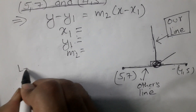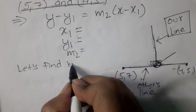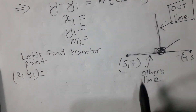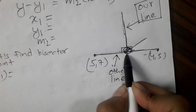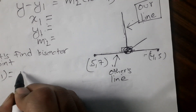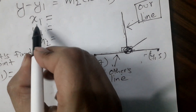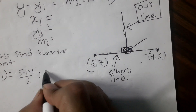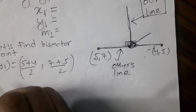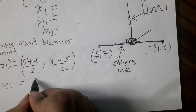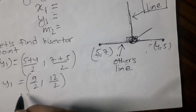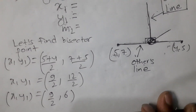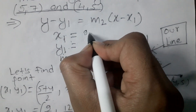Let's find the bisector point, which is x1 y1. The bisector point means the midpoint. The midpoint formula is x1 plus x2 by 2 comma y1 plus y2 by 2. So directly: 5 plus 4 by 2 comma 7 plus 5 by 2, which gives 9 by 2 comma 12 by 2. Therefore x1 y1 equals 9 by 2 comma 6.